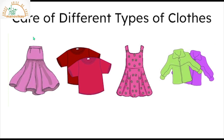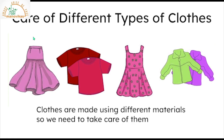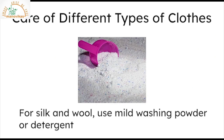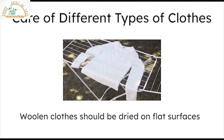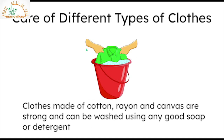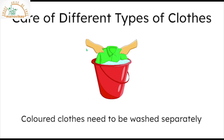Care of different types of clothes: clothes are made using different materials, so we need to take care of them. Silk and woolen clothes are very delicate, so we should use a very mild washing powder or detergent to wash them. We should not spin, squeeze or wring them. Woolen clothes should be dried on flat surfaces to avoid losing their shape. Clothes made of cotton, rayon and canvas are strong and can be washed using any good soap or detergent. Colors on some clothes may run, so we need to wash them separately.